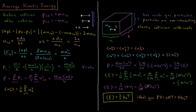So the time between successive collisions is equal to 2A over U₁ₓ. The magnitude of the force acting on the particle from this wall is ΔP divided by Δt — the change in momentum divided by the change in time between these successive events.